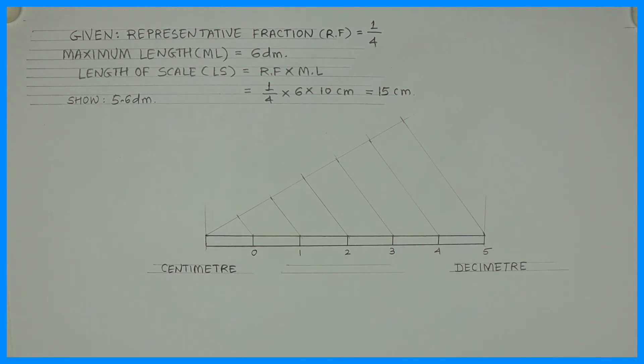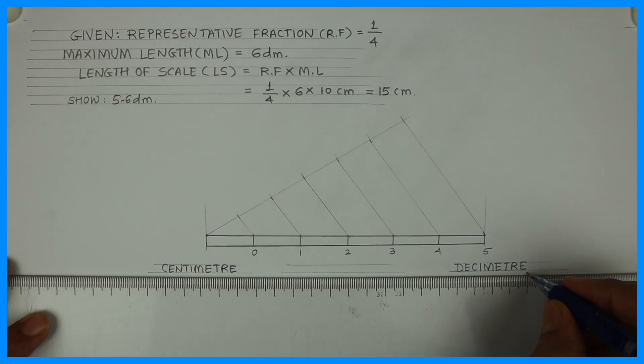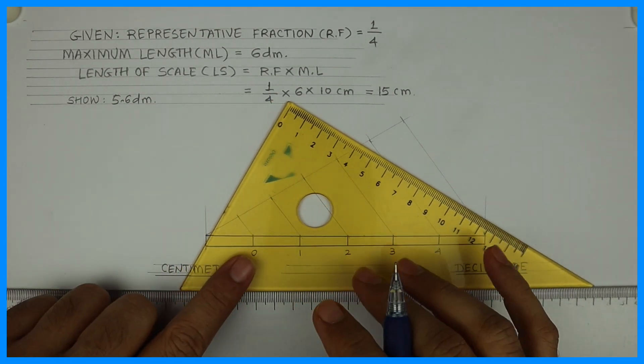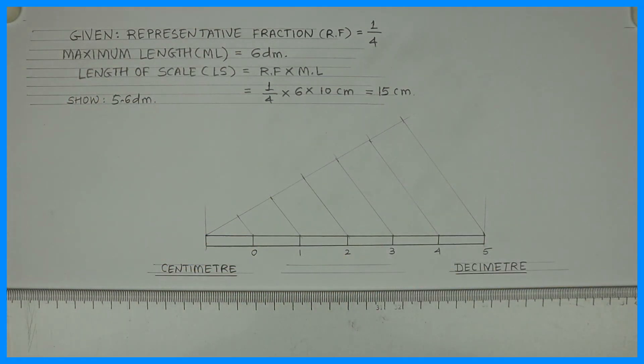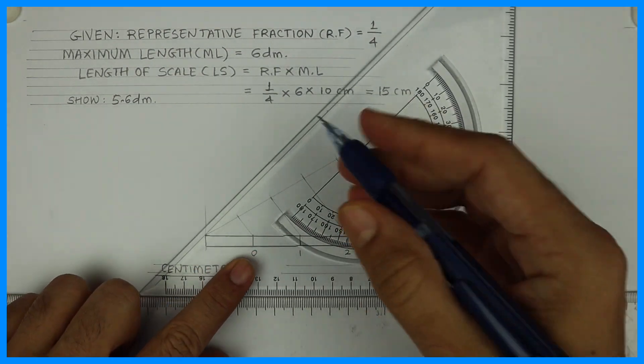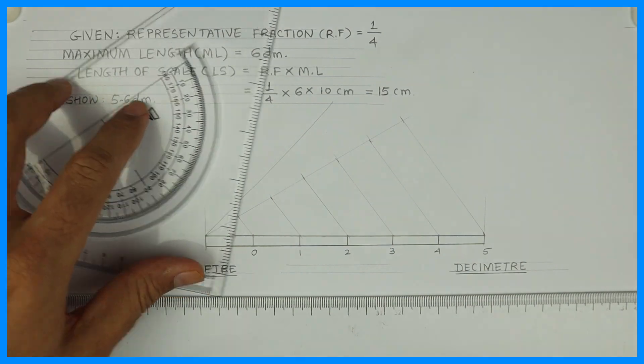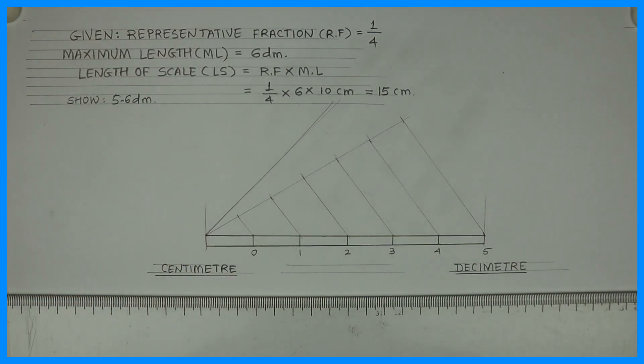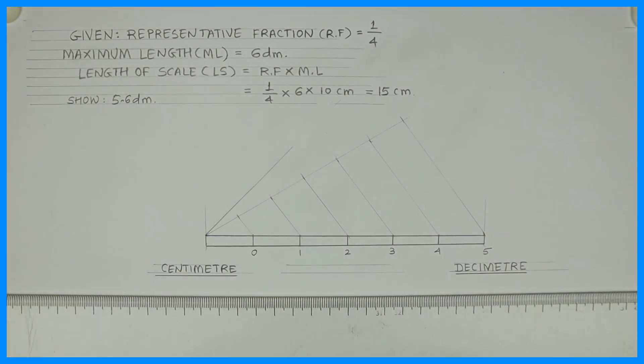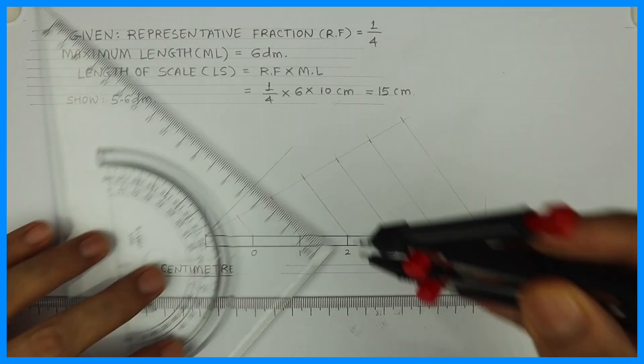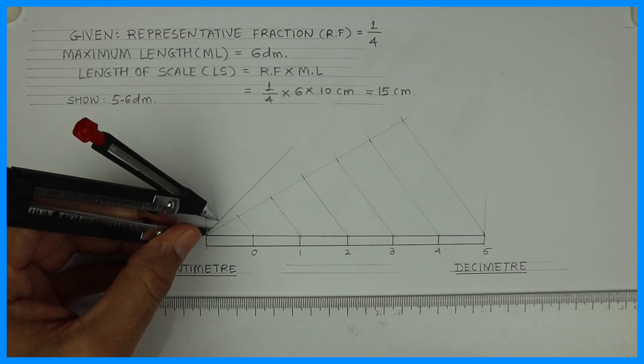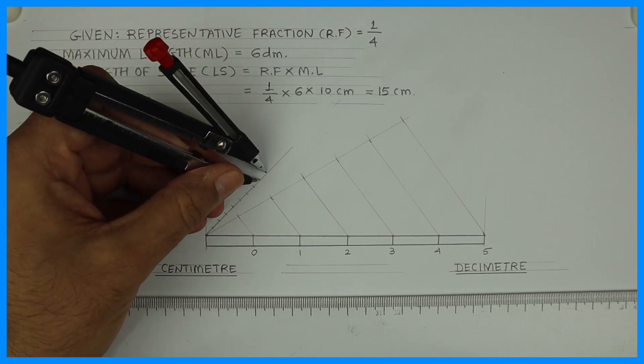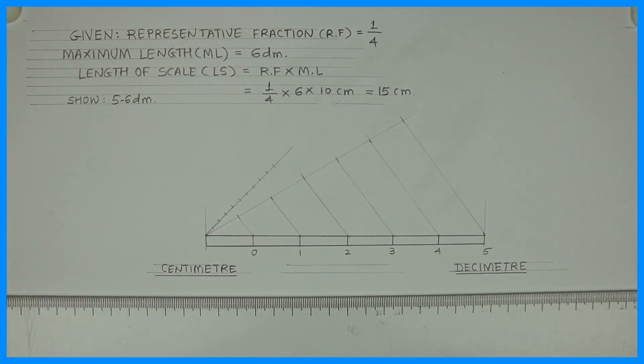So since I have to mark 5.6 decimeter, I'm dividing first block into 10 part. See this. I will take angle. See first angle I took 30 degree. Second angle I can take 45 degree or 60 degree. So I'm taking 45 degree. And on this you can mark 11 centimeter or 0.5 centimeter. So you cut 10 times.